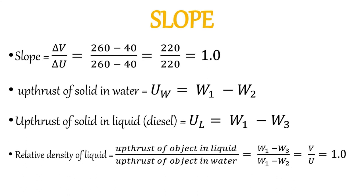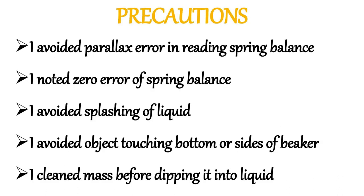As an assignment, go and find the exact known value of the relative density of diesel — note that the relative density of water is 1. Regarding precautions taken during the experiment: we avoided parallax error when reading the spring balance, checked zero error before starting, avoided splashing liquid, avoided objects touching the bottom or sides of the beaker, and cleaned the masses before dipping them into each liquid.